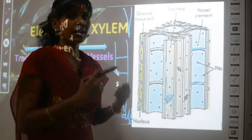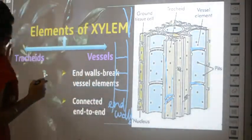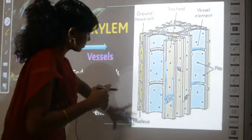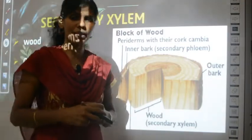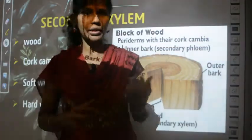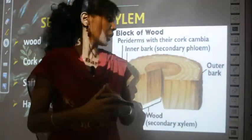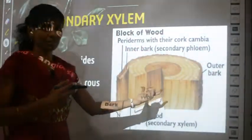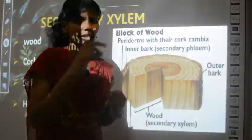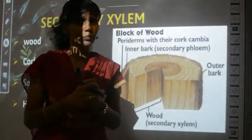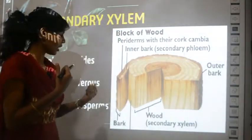Next is a special type of xylem called secondary xylem. Secondary xylem is nothing but wood. Not all plants have wood — only some plants have it. If a plant has secondary xylem, it has wood. Looking at wood, you'll notice an outer region called bark. If you stand near a tree, bark is the part you can peel off — the outer layer.